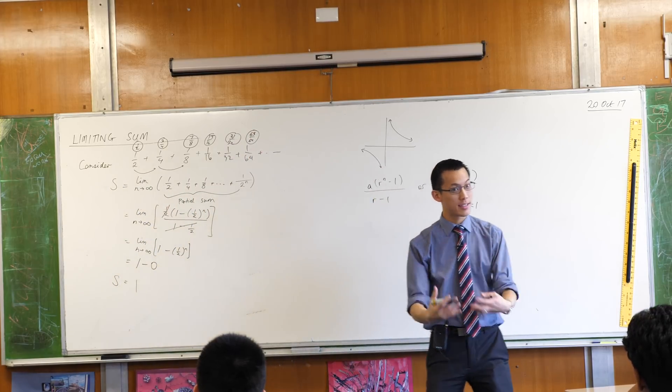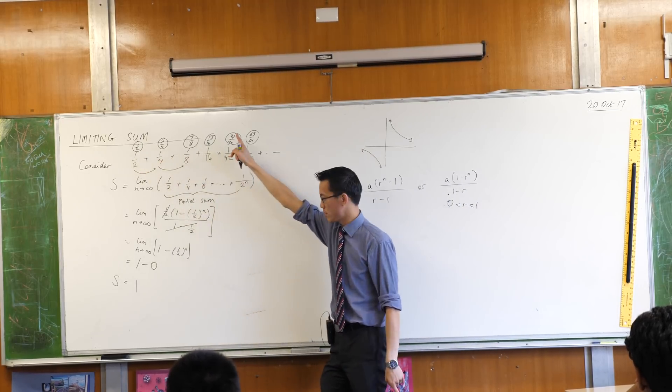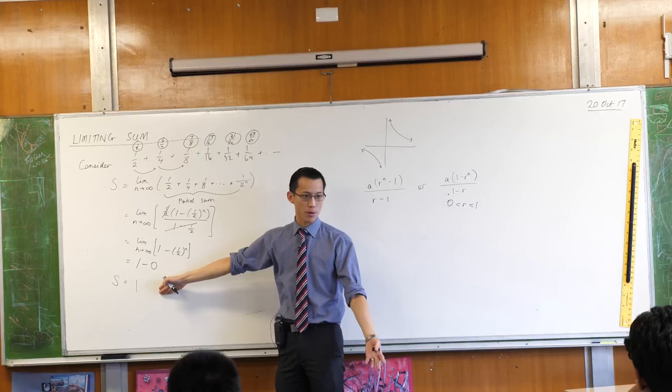So do you see how the limiting sum literally means, what do these partial sums approach? They clearly approach one, don't they?